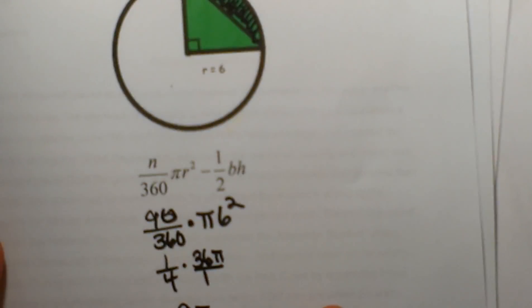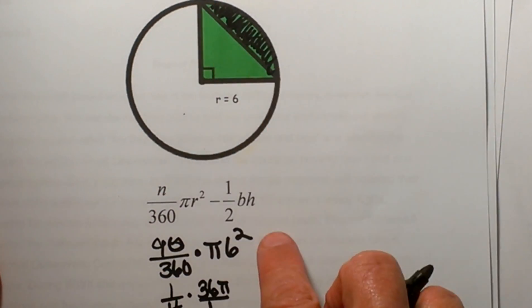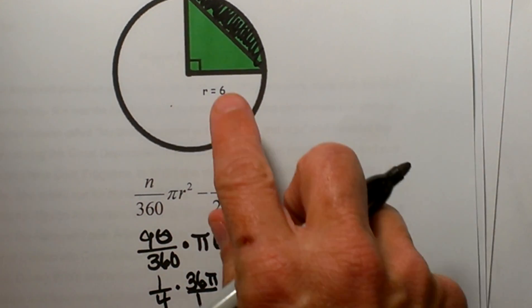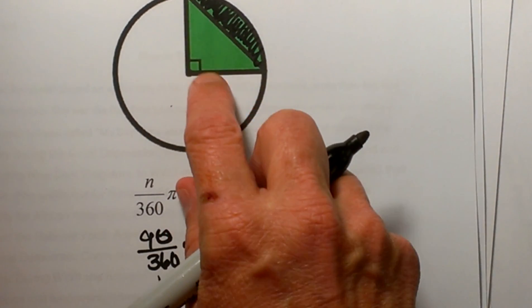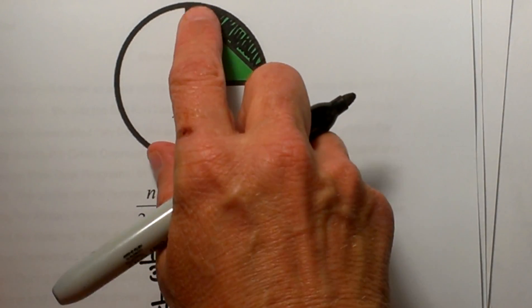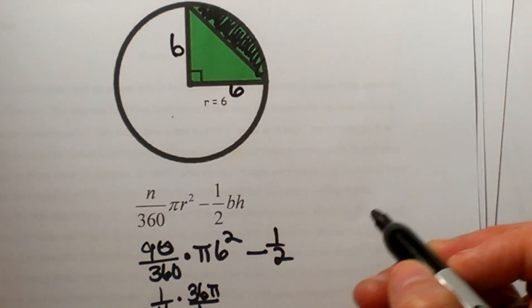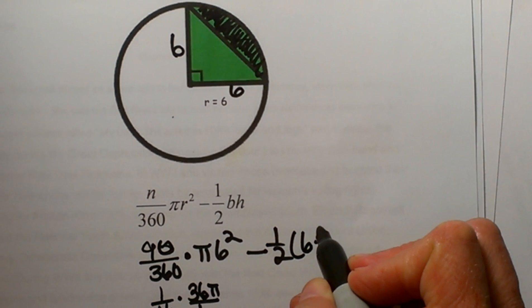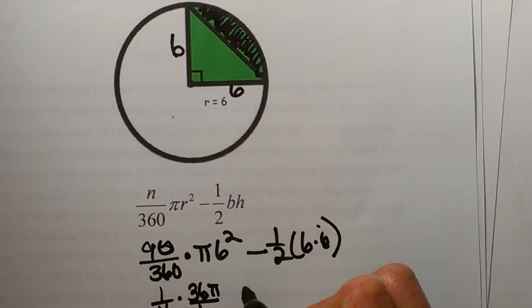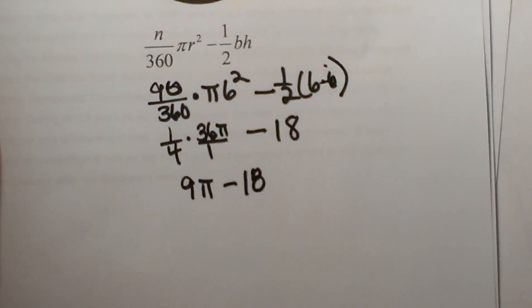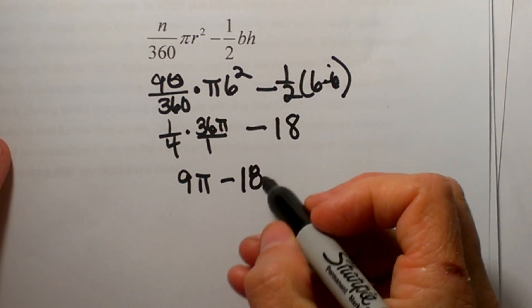So 9 pi is the area of the sector. Now let's subtract off the triangle: one half of the base times the height. The base and the height on a right triangle inscribed in a circle is just the radius, so both measure 6. One half of 6 times 6 is 18. So the area of the segment is 9 pi minus 18.